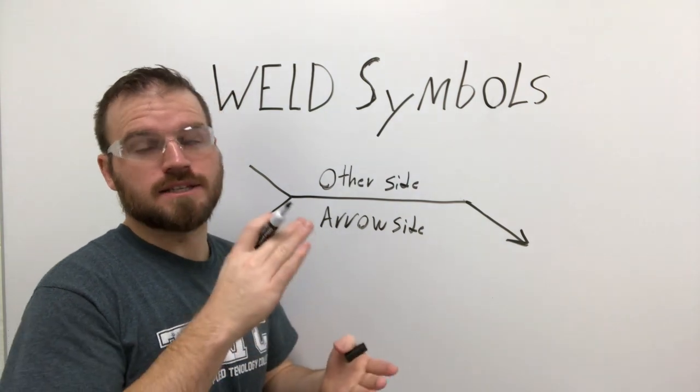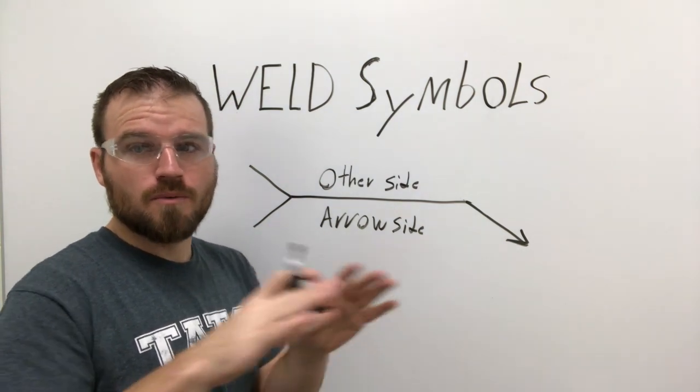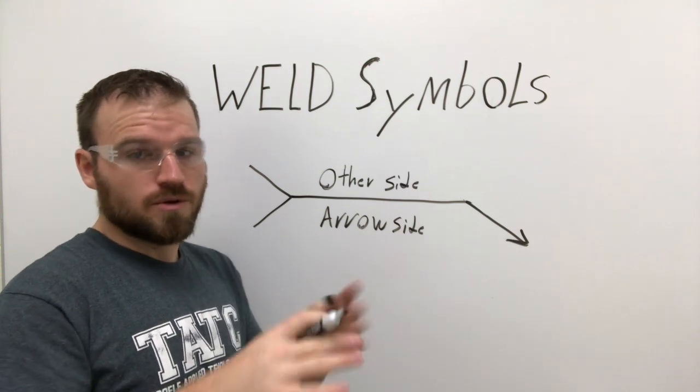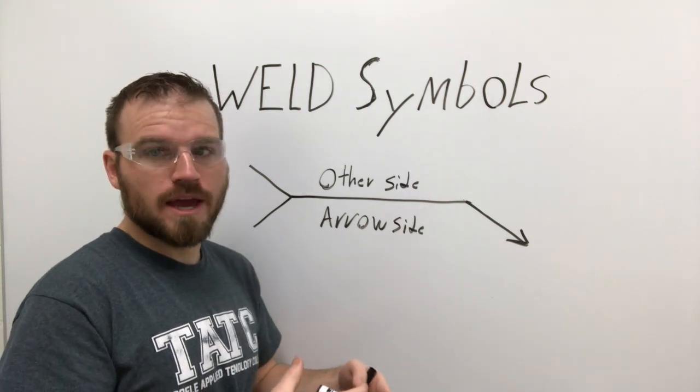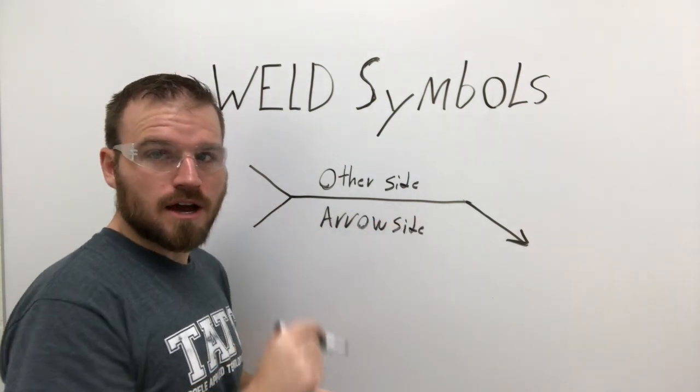So what I'm going to do is show you guys a T-joint. I don't want you guys to get too nervous because we're not to the point where I want to teach you about T-joints or the symbols for T-joints, but it is a very easy way to see this in real life. So I'm going to go ahead and draw that up and we're going to talk about it for a second.